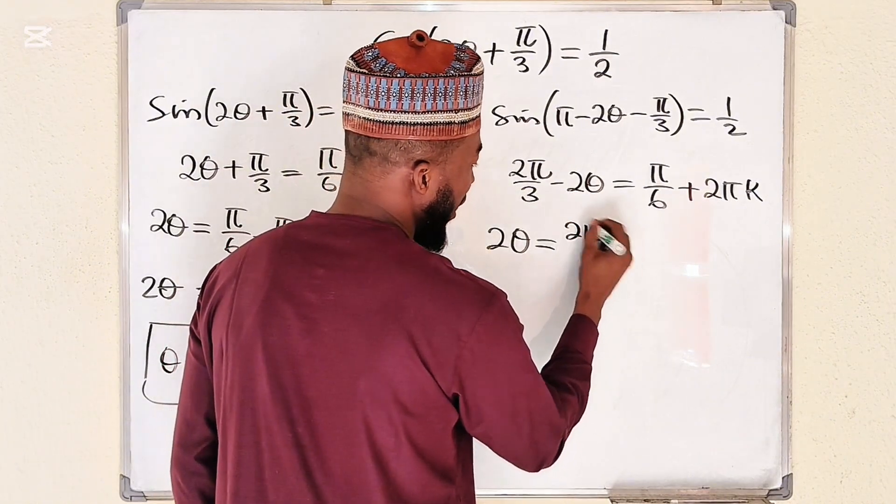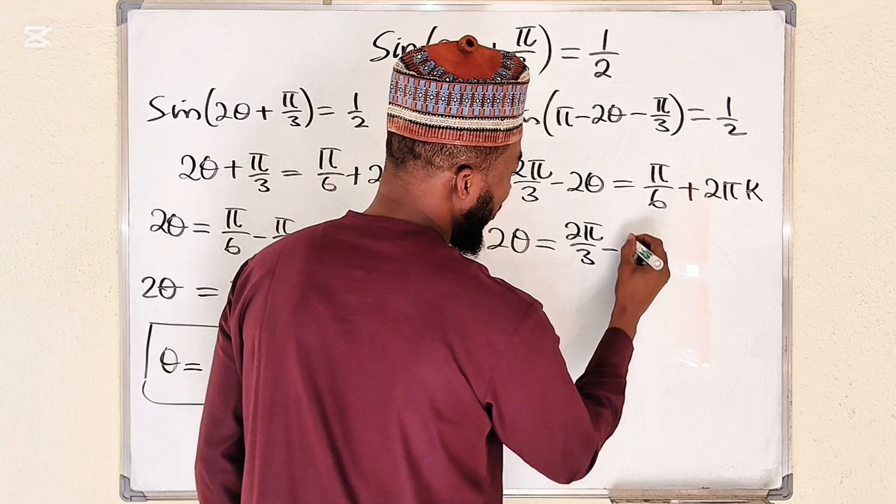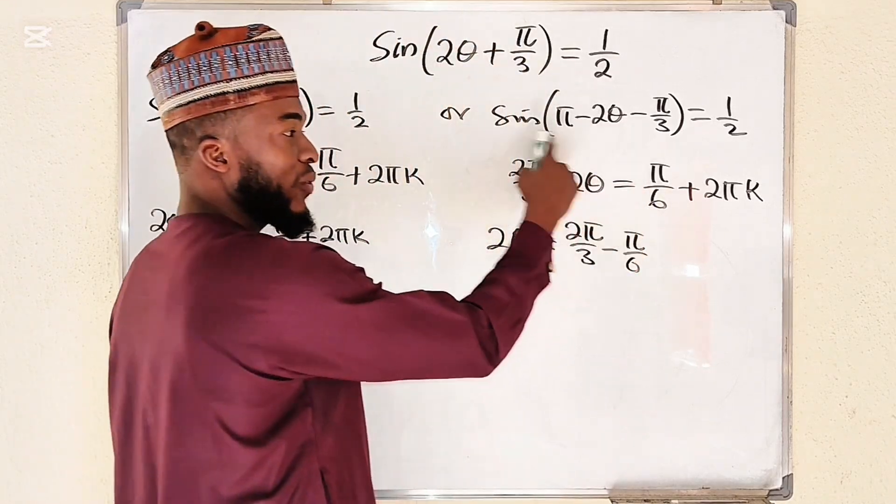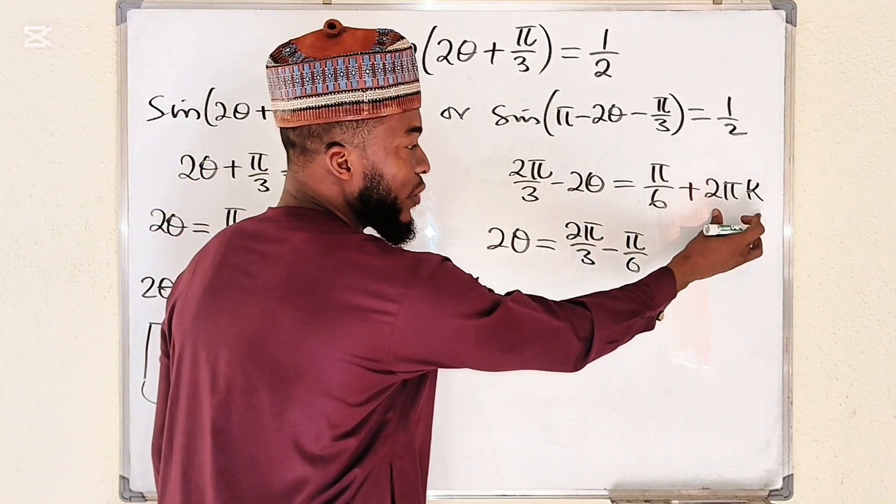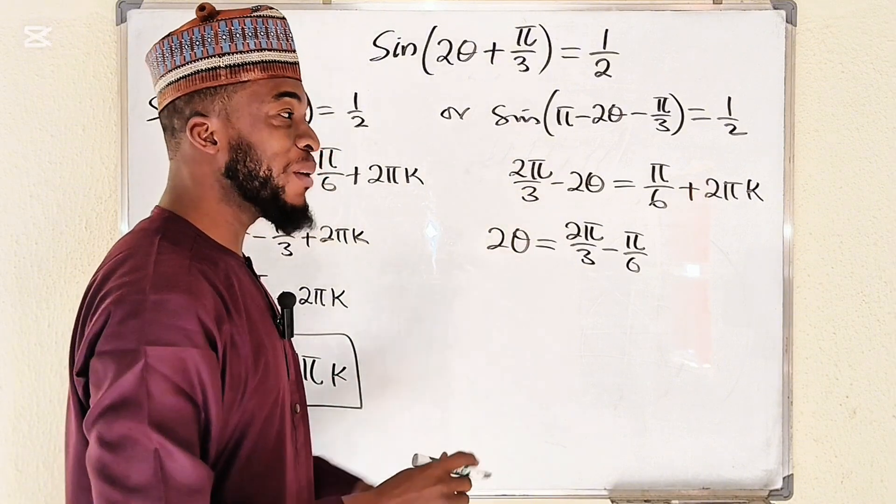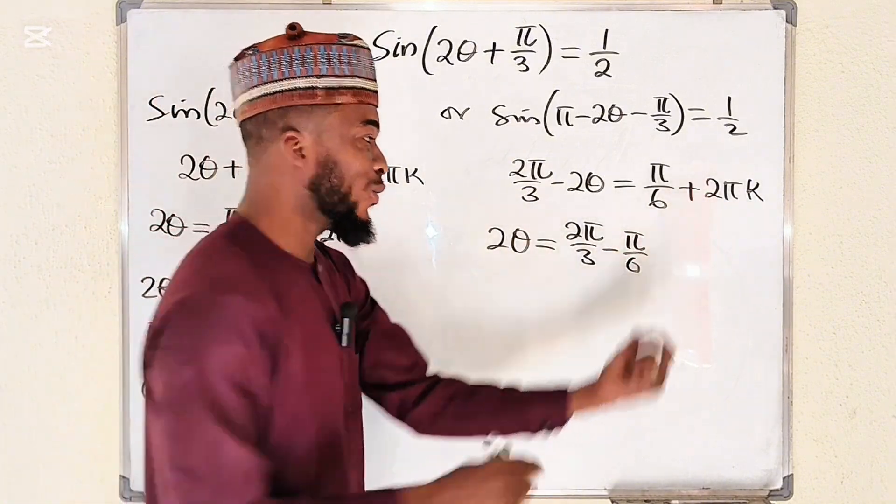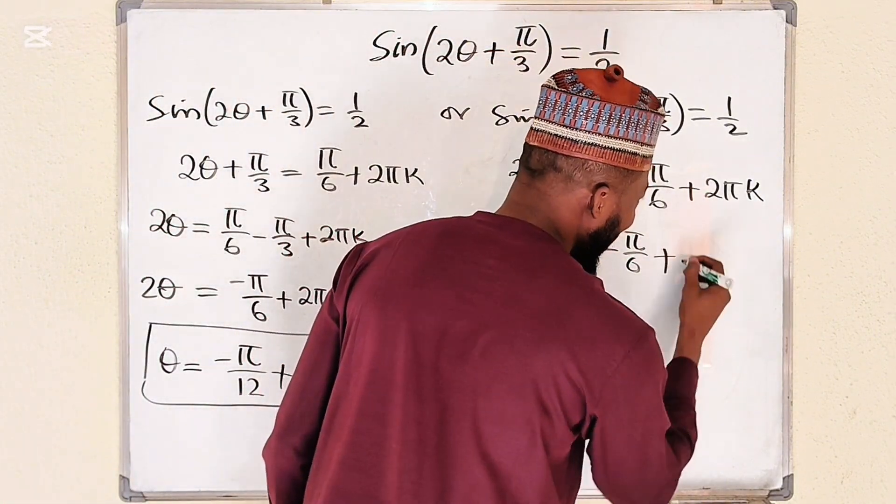It will be equal to 2 pi over 3 minus pi divided by 6. As this crosses over it becomes negative, this crosses over it becomes negative, but remember this is just multiples to obtain other coterminal angles so you can leave it as positive.